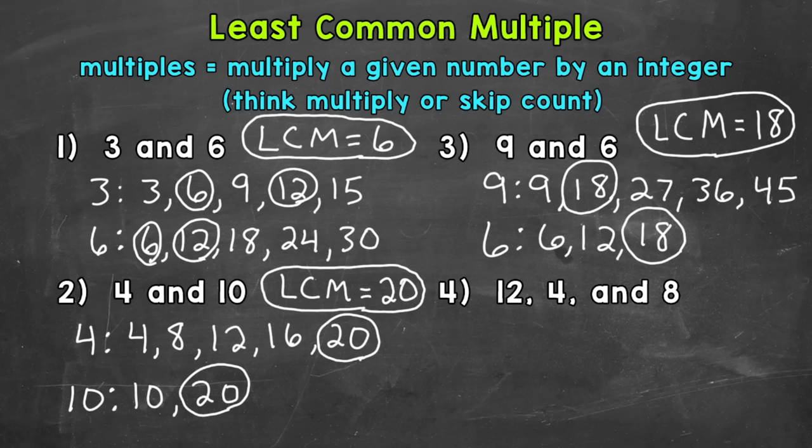Let's start with some multiples of 12. So 12, 24, 36, 48, and 60. Let's do four now.